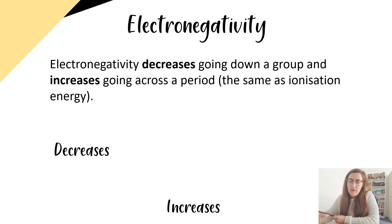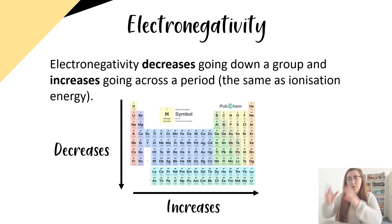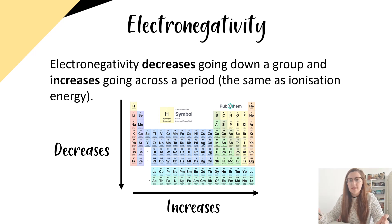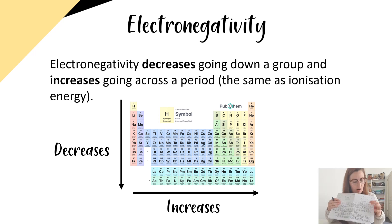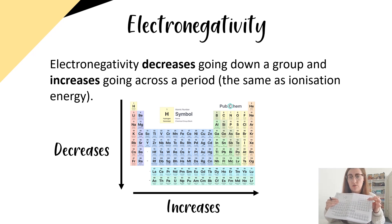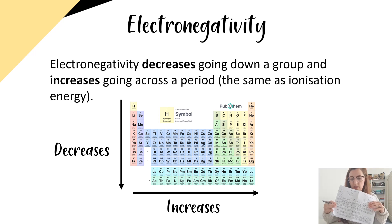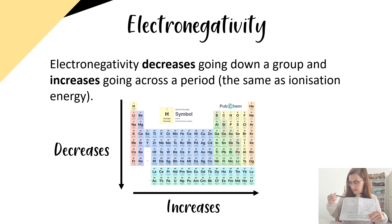If we look at the trend in electronegativity in the periodic table: electronegativity decreases going down a group, and electronegativity increases going across a period. The most electronegative atoms are up in the top right-hand corner, and the least electronegative atoms are down in the bottom left-hand corner. So electronegativity increases diagonally towards the top right.